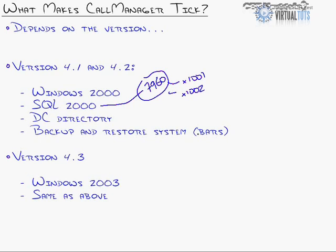The most critical thing about your Cisco Call Manager is that database. When you're backing it up, that is the number one thing you back up. Because the Call Manager could explode — you could lose everything — but if you've got the database, you can restore your entire infrastructure. Call Manager is just an image; you just stick in the image CDs and it'll re-image Call Manager. But SQL 2000, that's where everything's at.